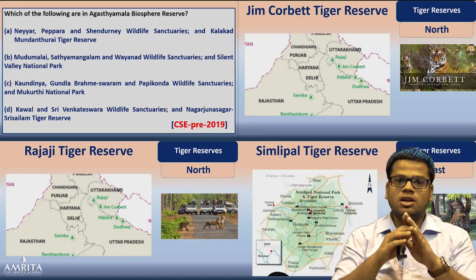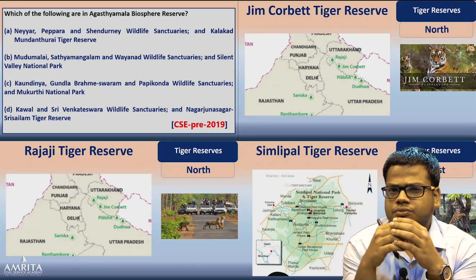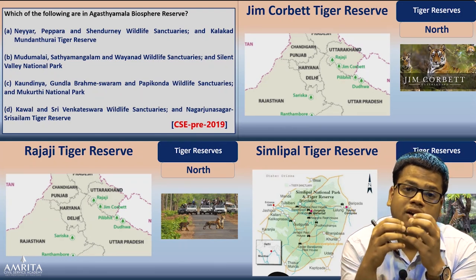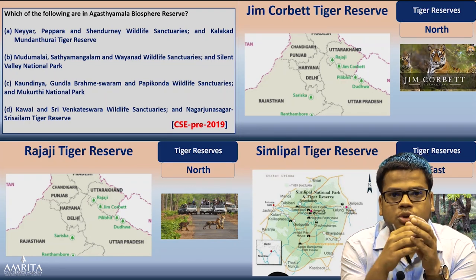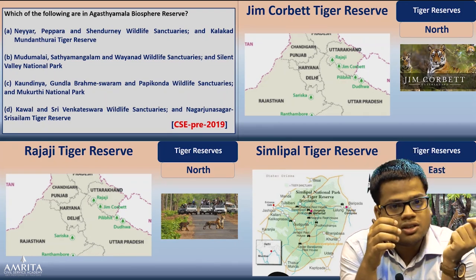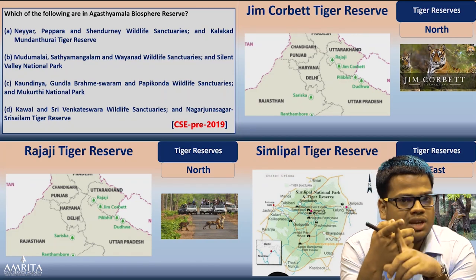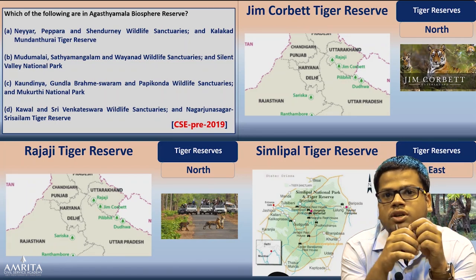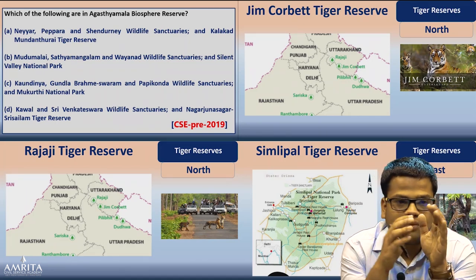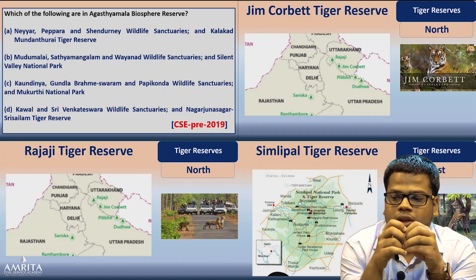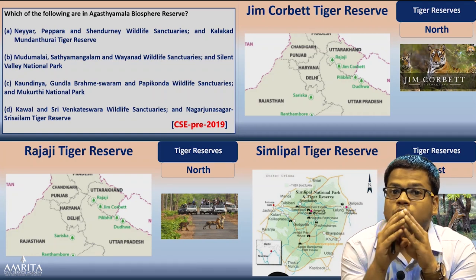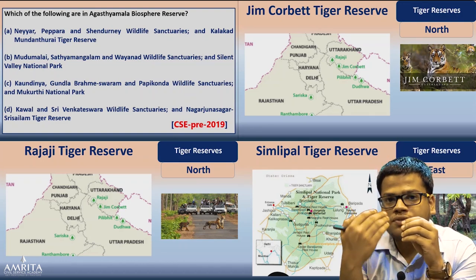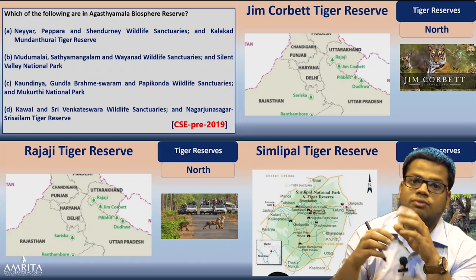With the Impetus series, in just two to three hour sessions — three sessions covering tiger reserves in depth from the static portion — if any current affair comes, you are able to relate to that tiger reserve, know its location, and your question is done. This session does not promise you that you will solve all questions, but prelims is about making the probability of success higher. That is our sole aim.